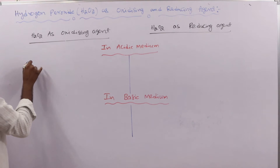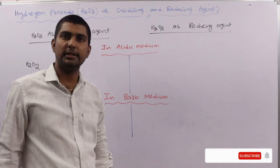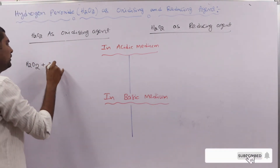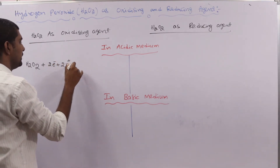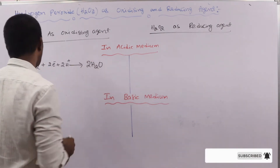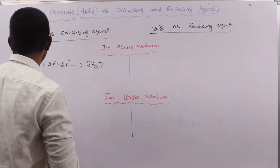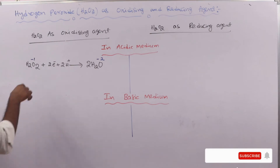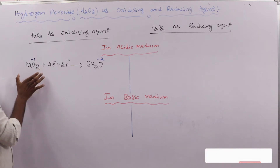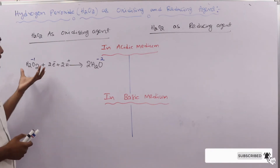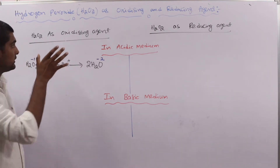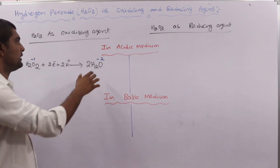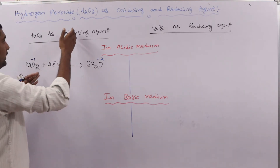An oxidizing agent is one which oxidizes other substances and itself undergoes reduction. In the acidic medium: H2O2 + 2e⁻ + 2H⁺ gives two moles of H2O. The oxidation state of oxygen goes from −1 in H2O2 to −2 in H2O, so oxidation number is reduced — this is undergoing reduction. Therefore H2O2 acts as an oxidizing agent by taking electrons from another substance and oxidizing it. This reaction is in the acidic medium.